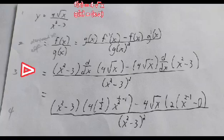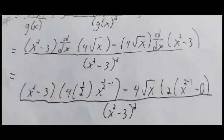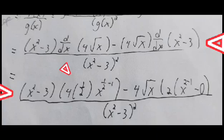Before we solve them, we first find the derivative of 4 times square root of x, which equals 4 times one-half x to the power of one-half minus 1. And the derivative of x squared minus 3 equals 2x to the power of 2 minus 1, then minus 0.